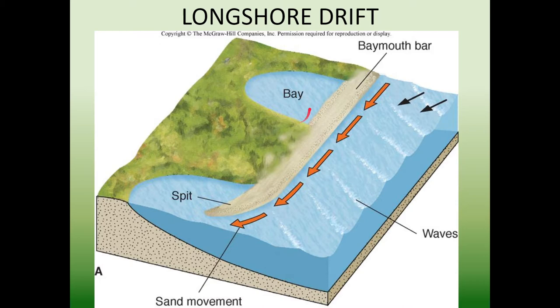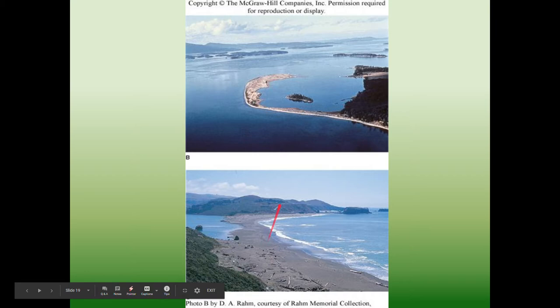This longshore drift can end up carrying the sand long distances, creating coastal features like barrier islands. It can cross these bay areas and create things called spits, where it doesn't completely cross them but kind of pushes out a little bit. Here's a photo of a spit, and here's an area where that sand has actually crossed that bay — it's migrating across the bay and cutting it off.